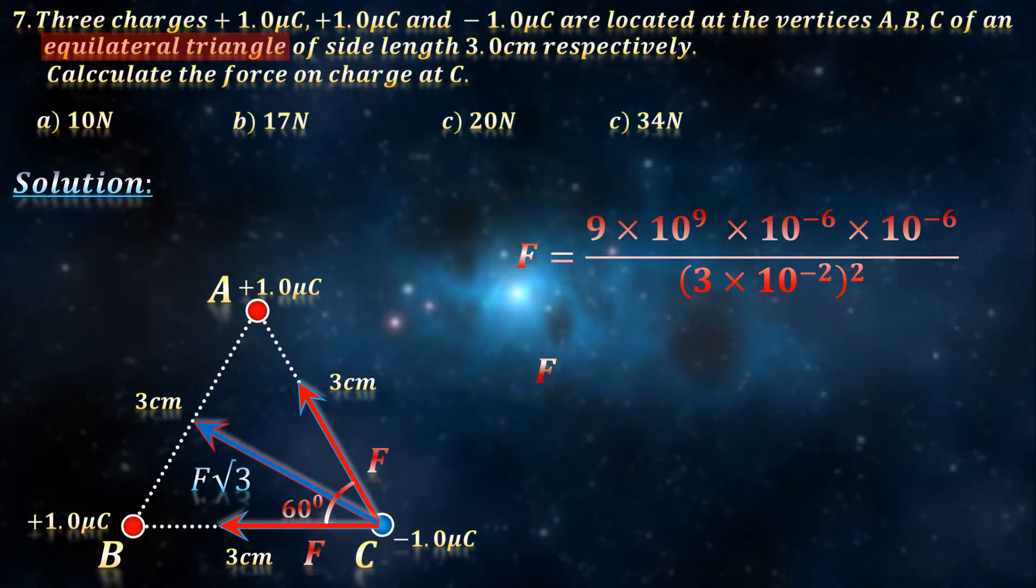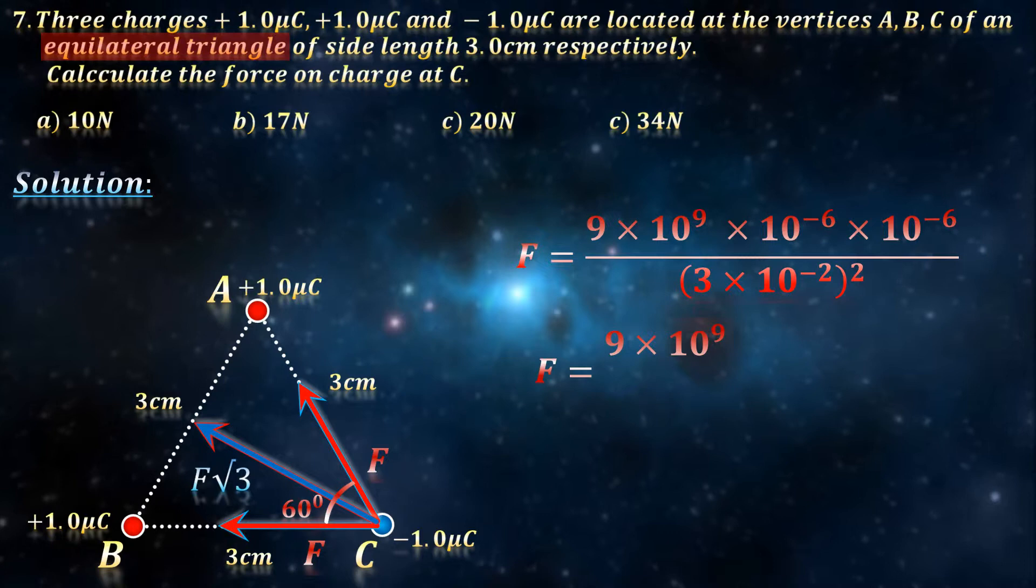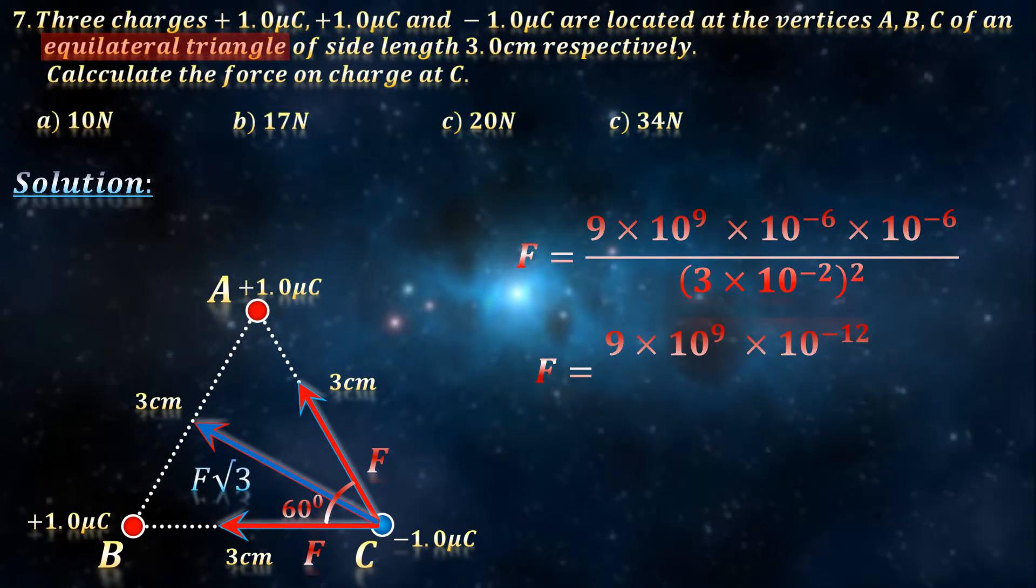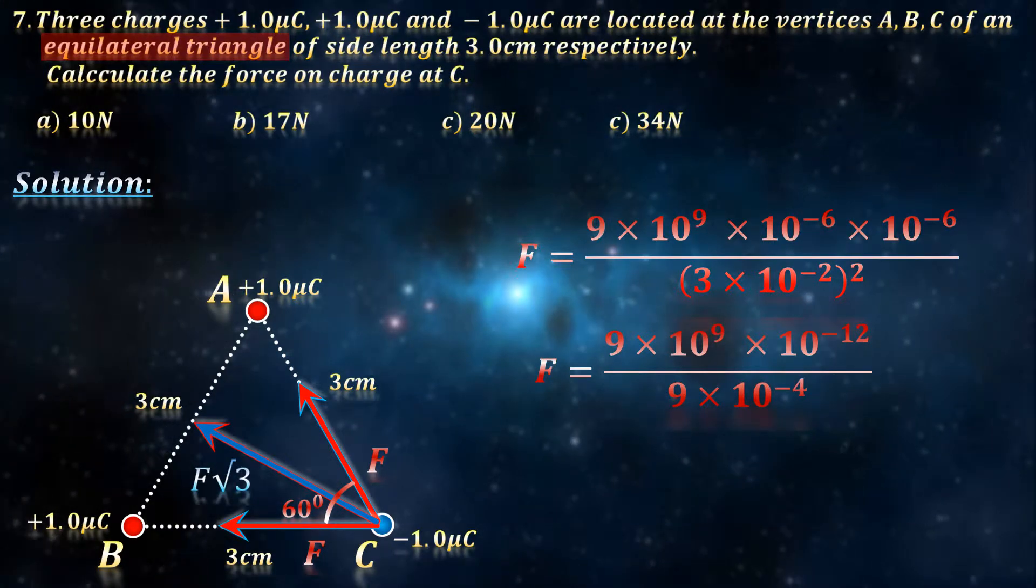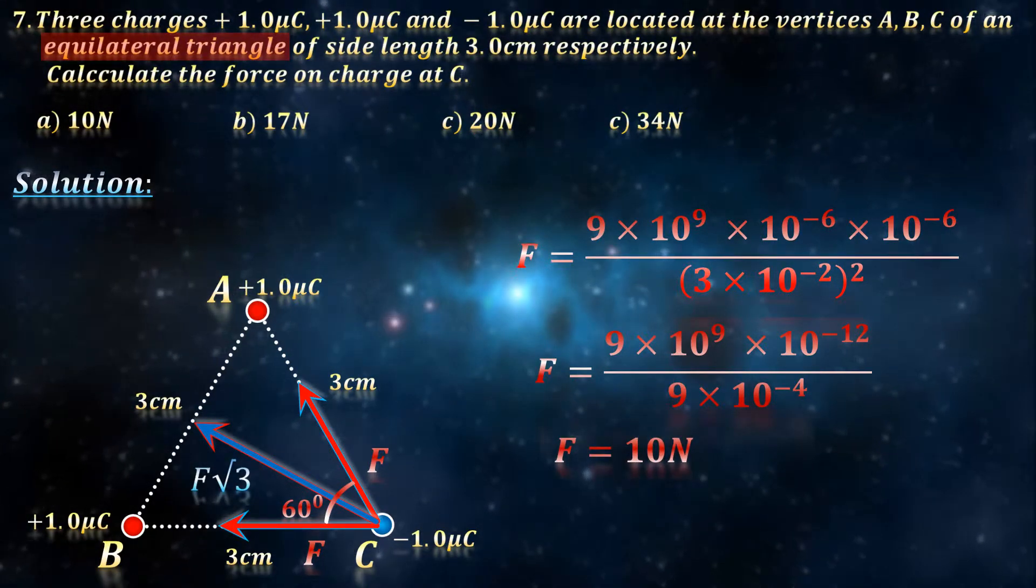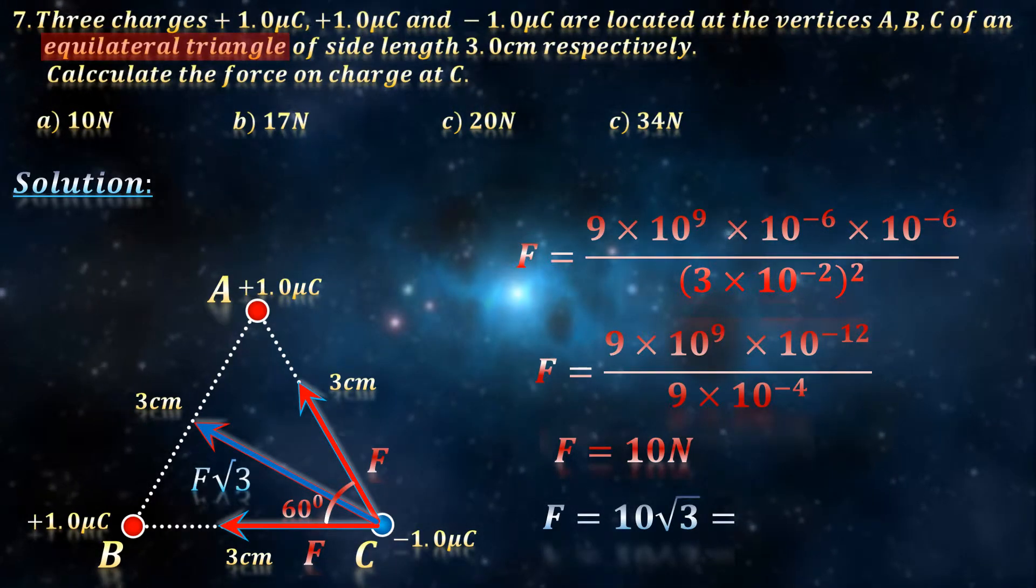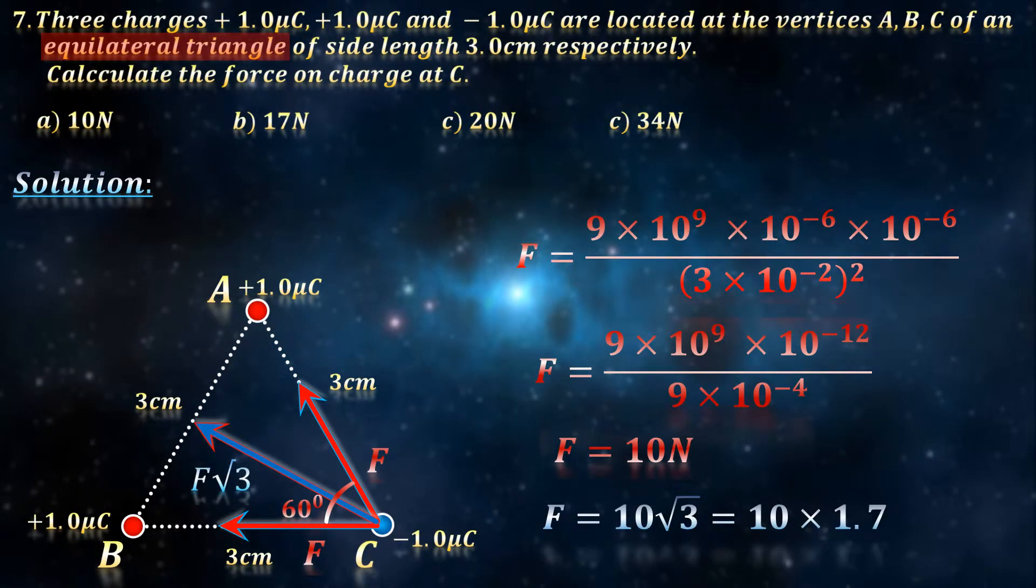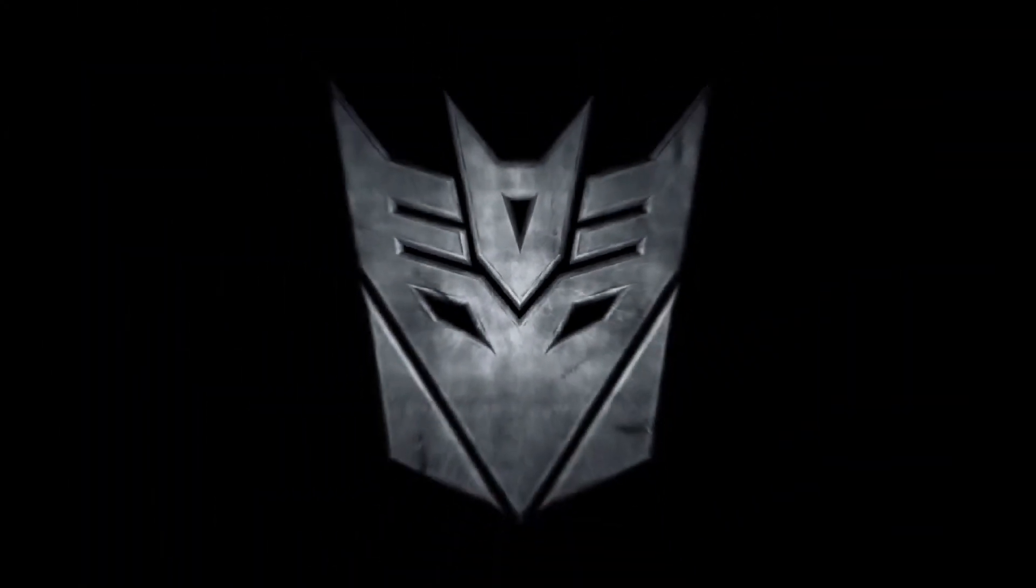This gives you F equals 9 times 10 to the 9th, times 10 to the minus 12, divided by 9 times 10 to the minus 4, which gives you 10 N. So the resulting force becomes 10 root 3, which is roughly 10 times 1.7, giving you 17 N.